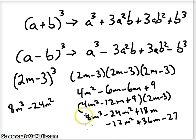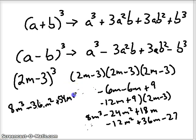Stack them up with their like terms. Negative 3 times negative 12m is positive 36m, and negative 3 times positive 9 is negative 27. So when we combine all of our like terms there, we've got 8m cubed minus 36m squared, and then 18 and 36 would give us 54m and minus 27. So that's our final answer.